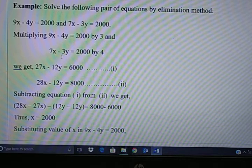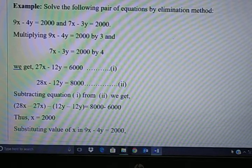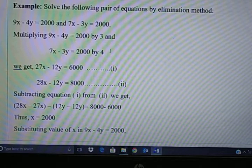But to make it very easy I have taken 4 and 3. When you multiply 4 with 3 you get 12y, and in the second equation 3 times 4 you get 12y. The first equation is multiplied with 3 where you get 27x minus 12y equals 6000.